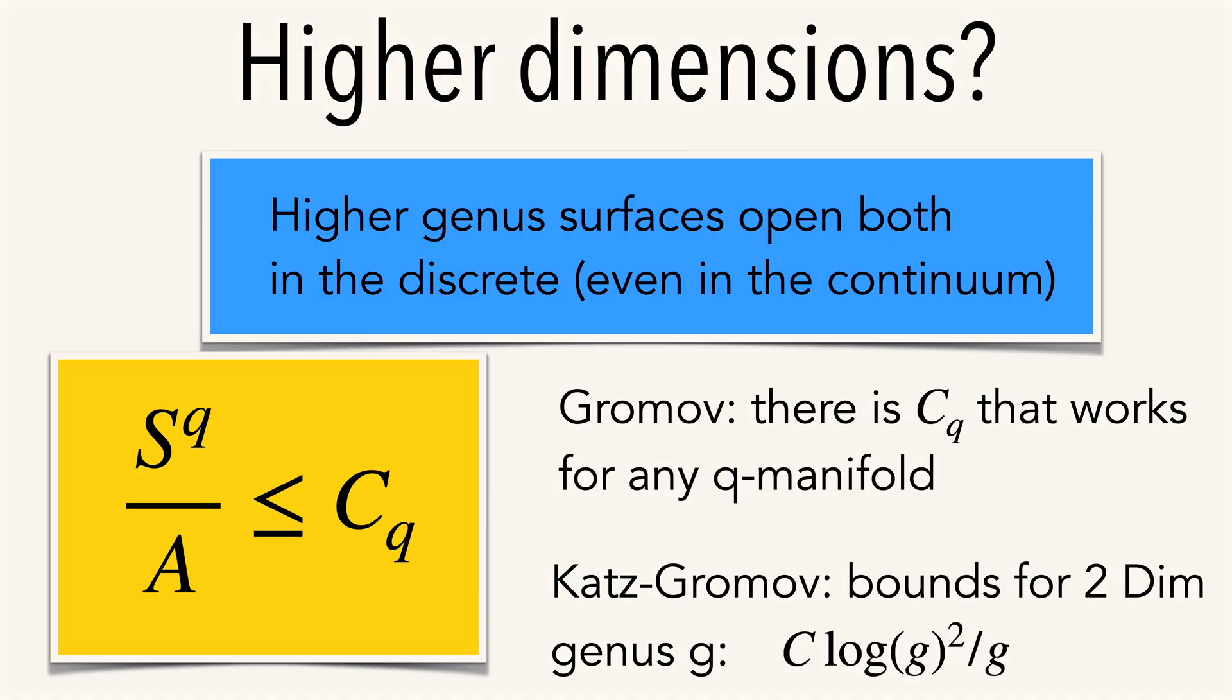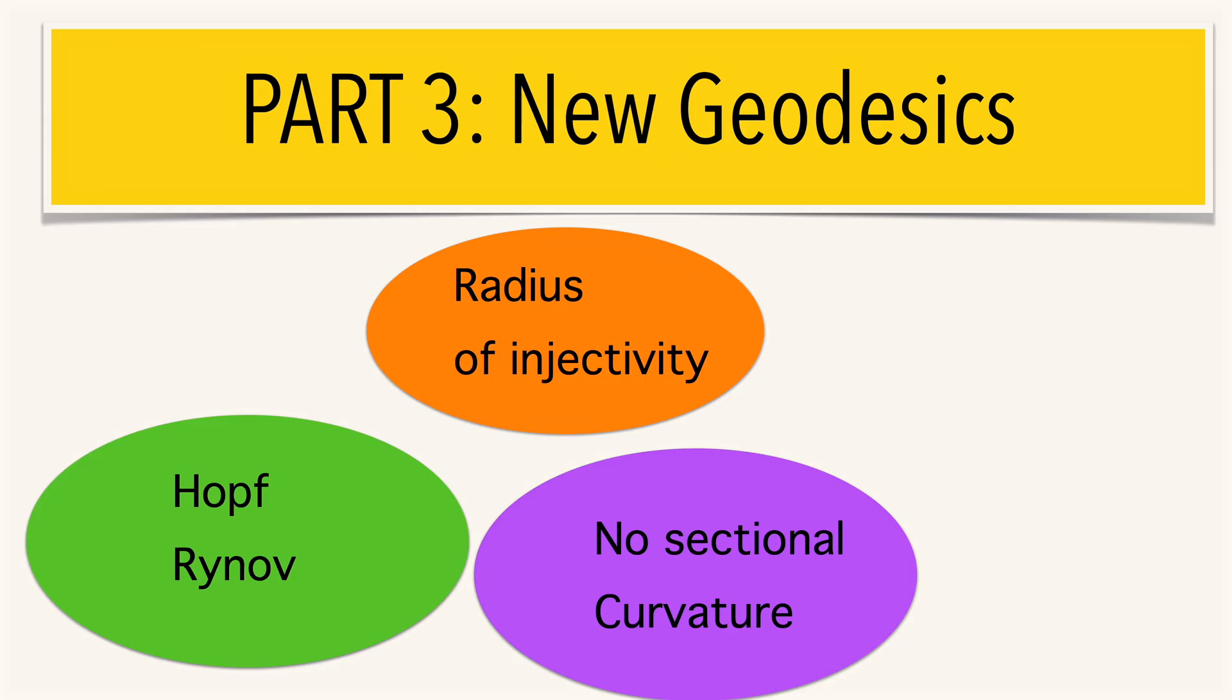For higher genus surfaces, many questions are open, and also for higher dimensional manifolds. One of the theorems one knows is that for any dimension, there is a constant that works for any of the manifolds.